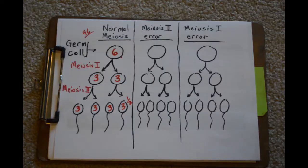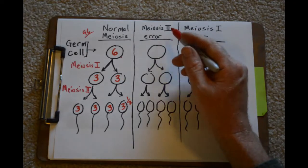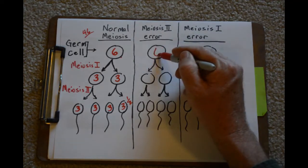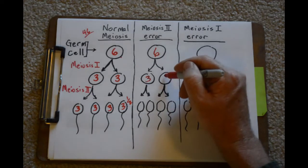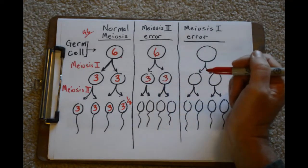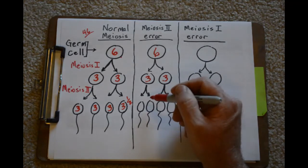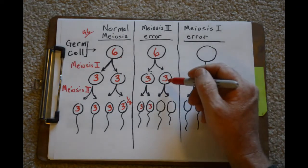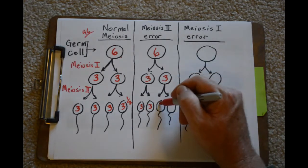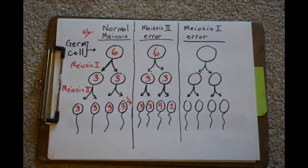round of meiosis I normally, so we ended up with three and three. On that red side we ended up with three and three, but one of the sisters stuck together, leaving four in this cell and two in another one. So in this case there was an error here, and I want you to figure out if there